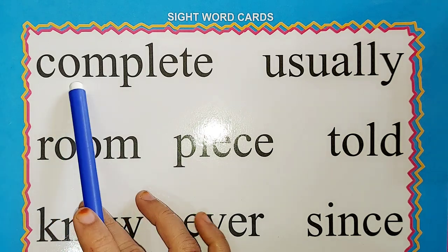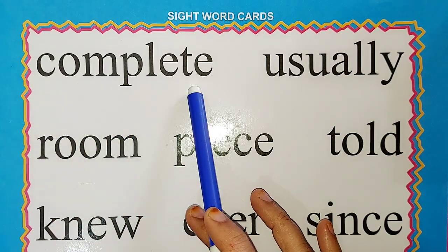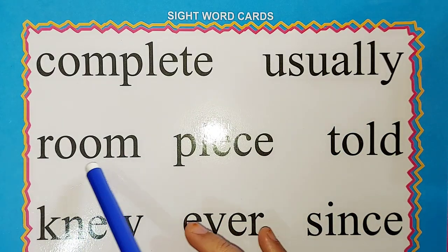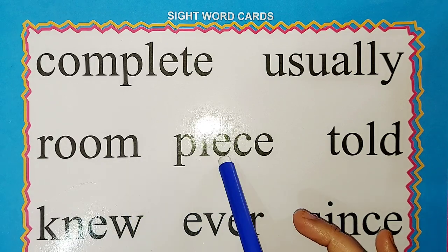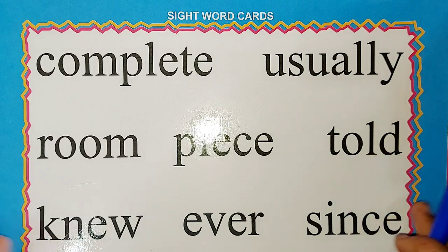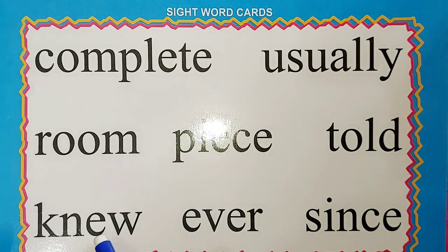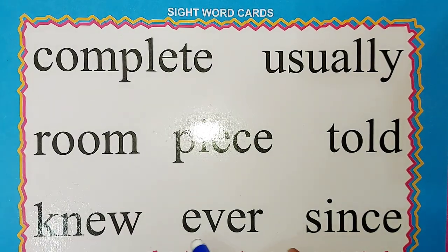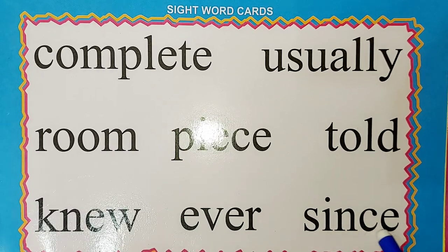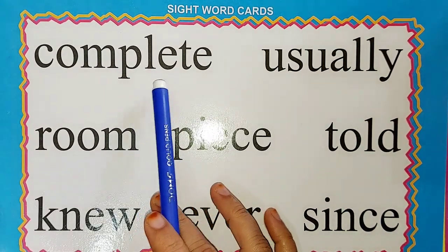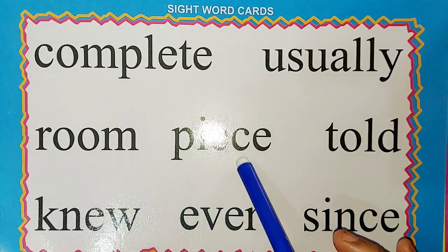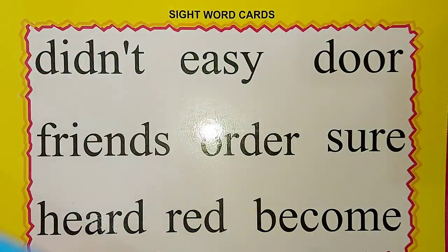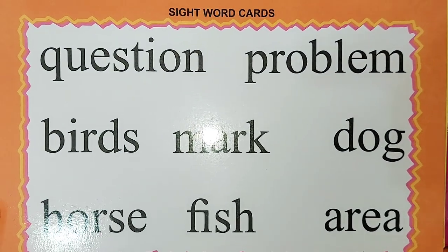C-O-M-P-L-E-T-E: complete. U-S-U-A-L-L-Y: usually. R-O-O-M: room. P-I-E-C-E: piece. T-O-L-D: told. K-N-E-W: new — here K is silent, so K-N-E-W is 'new'. E-V-E-R: ever. S-I-N-C-E: since. Once again: complete, usually, room, piece, told, new, ever, since.